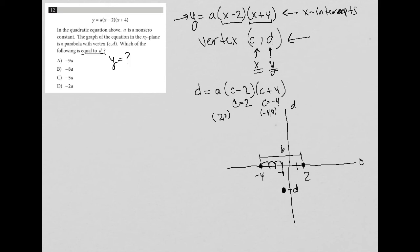So what do I know? I just figured out that c must be equal to negative 1. I know that for sure, given that positive 2 and negative 4 are my x-intercepts. So now I go back to my equation d equals a, c minus 2, c plus 4.